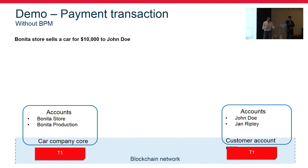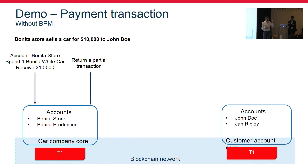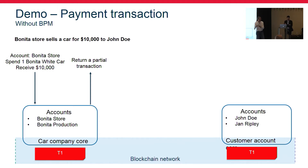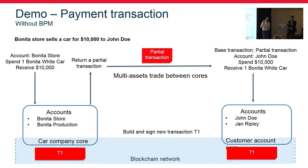In the demo, we'll have two different blockchain cores exchanging money and assets — in this case the asset is a car. The first core, the car company core, will spend one car and receive money, building what we call a partial transaction. The second core, representing the customer, will receive the car and pay 50,000 dollars. After that, the transaction is signed and broadcast to the network.